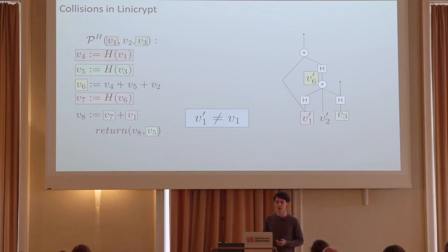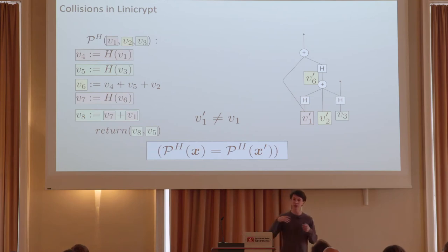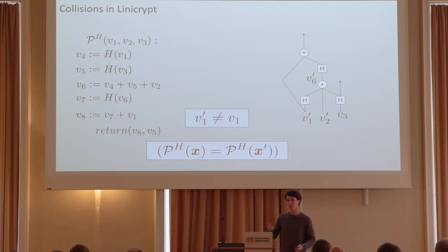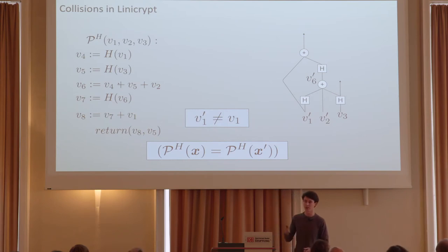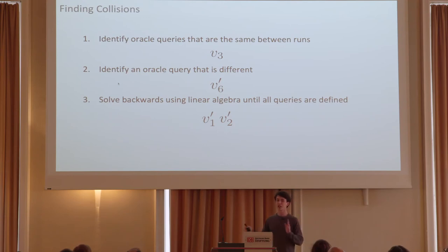Finally, we use the information on v1, v3, and v6 with some linear algebra to solve backwards for v2 in both runs. At this point, by construction we have different inputs to our lineecrypt program that produce the same outputs — a collision. The way we've done this following our special recipe also allows us to find second pre-images in exactly the same way.